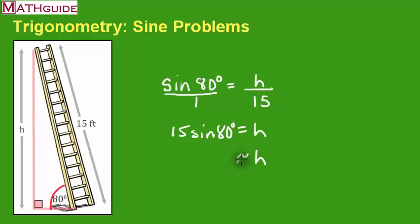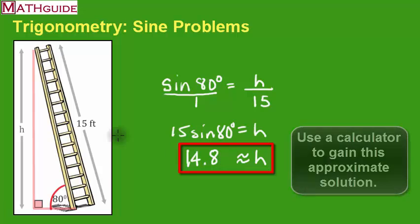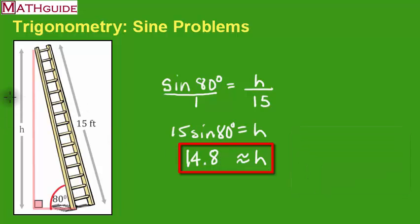So what does H turn out to be? Well, I did this earlier and I came up with 14.8. So it rounds to 14.8 and there we have it. So around 14.8 feet. So in other words, very close to 15 feet.